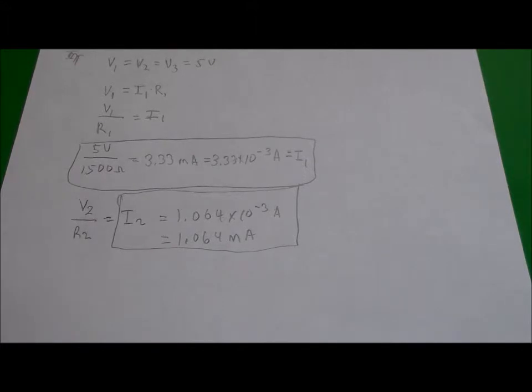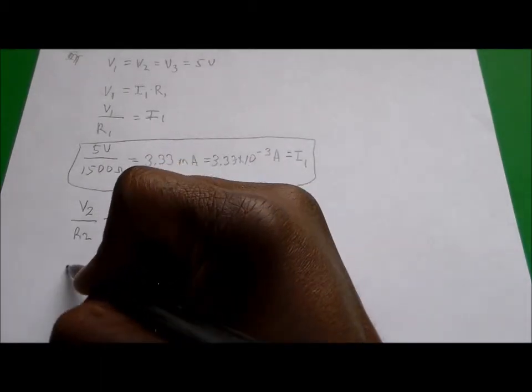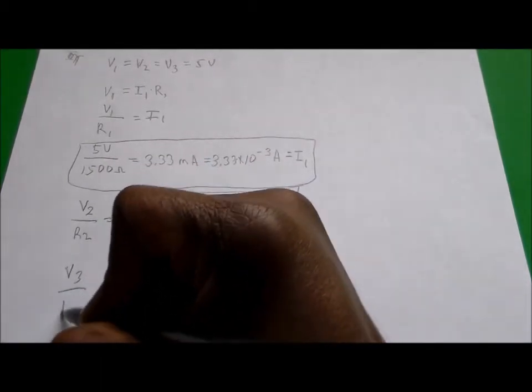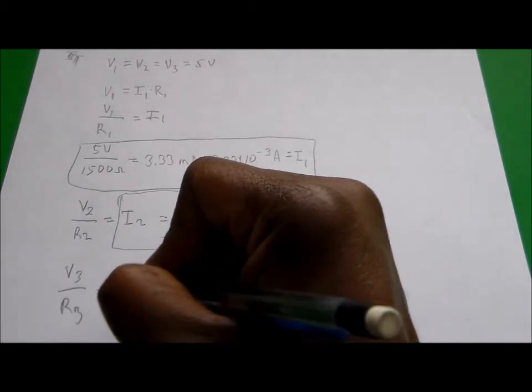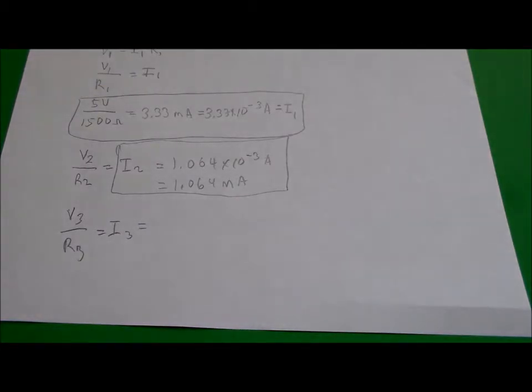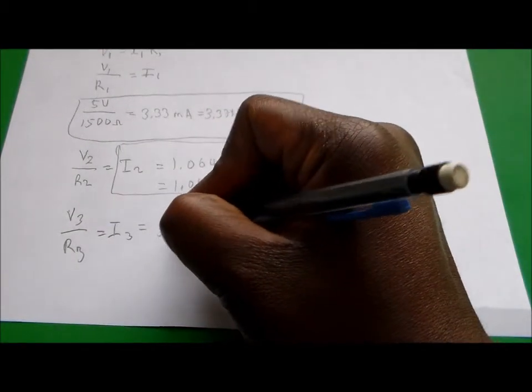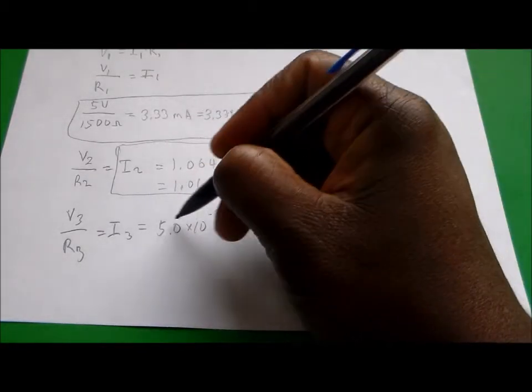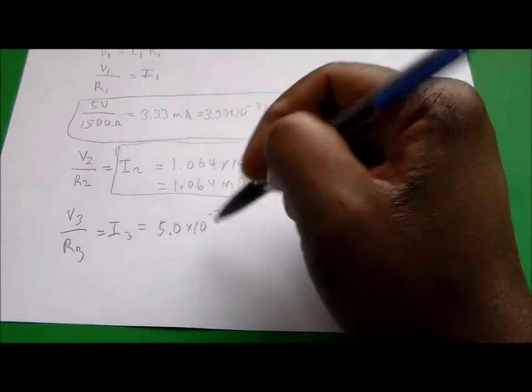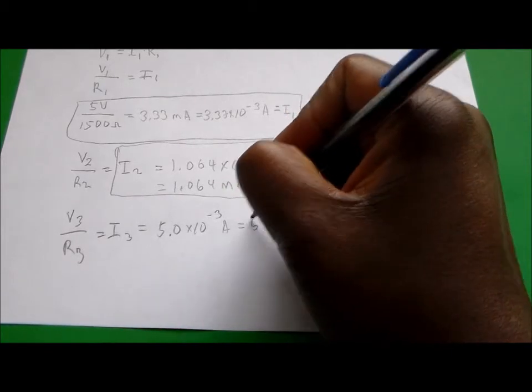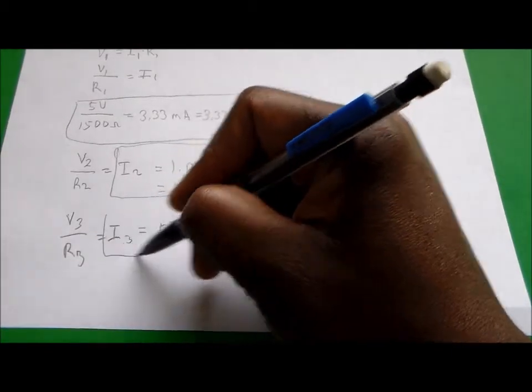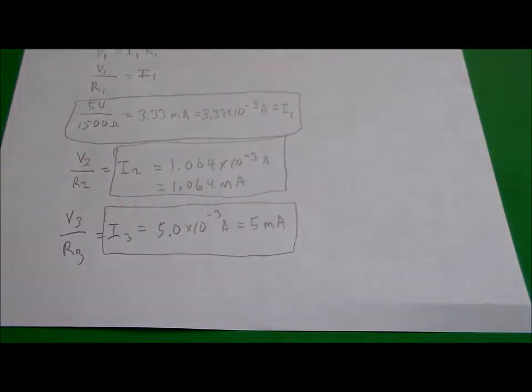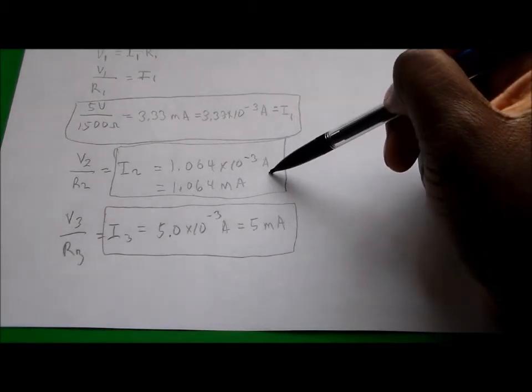V3 divided by R3 gives us the current through resistor number three. V3 equals 5, divided by 1000. That equals 5 times 10 to the negative 3 amps, which is equal to 5 milliamps. So those are the three currents going through resistor number one, resistor number two, and resistor number three.